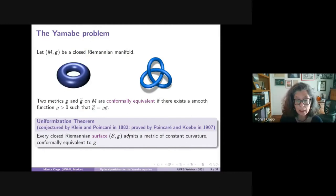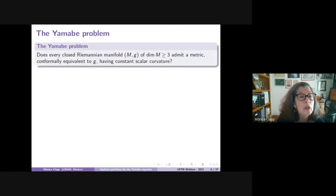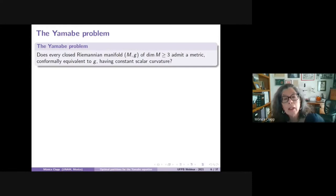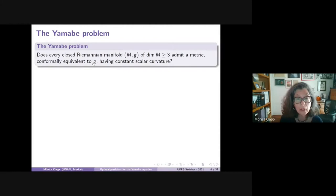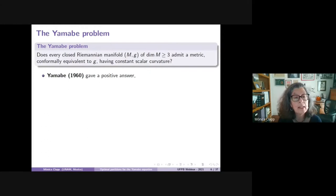A natural question is whether this result is true in higher dimensions. This is what is called the Yamabe problem: whether every closed Riemannian manifold M with a metric g of dimension larger than or equal to three admits a metric that is conformally equivalent to the given metric and for which the manifold has constant scalar curvature. It is called the Yamabe problem because Yamabe in 1960 published a paper giving a positive answer to this question.